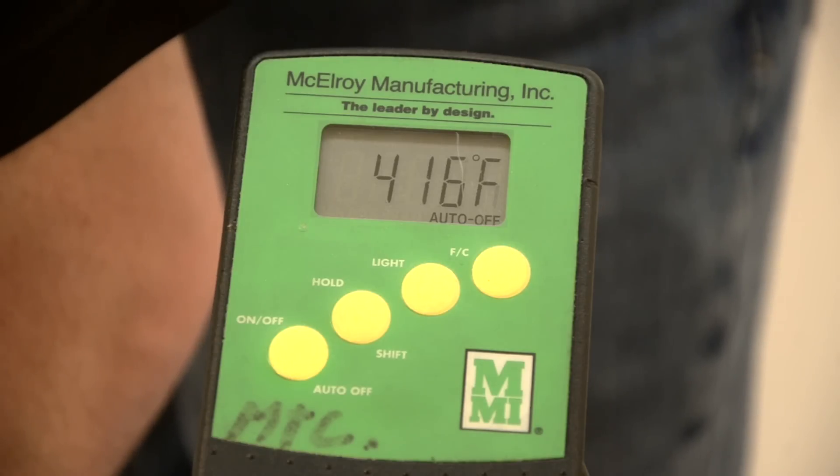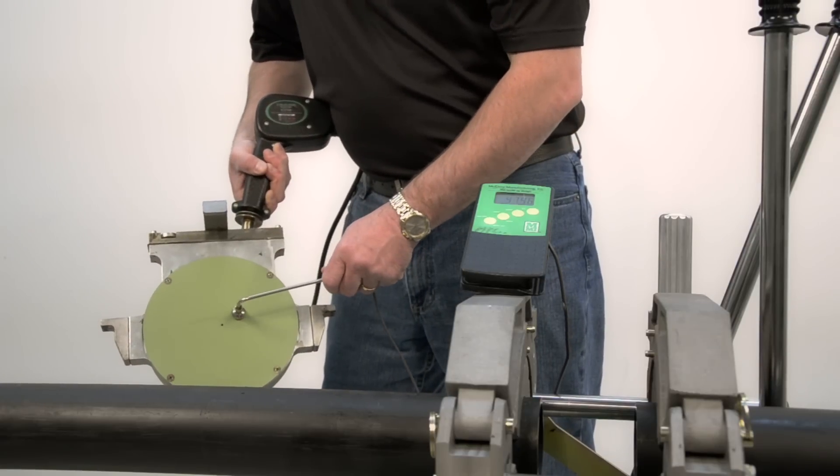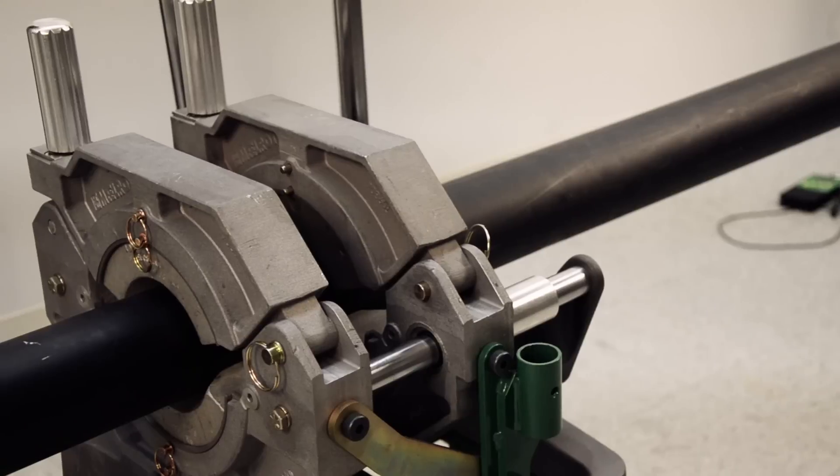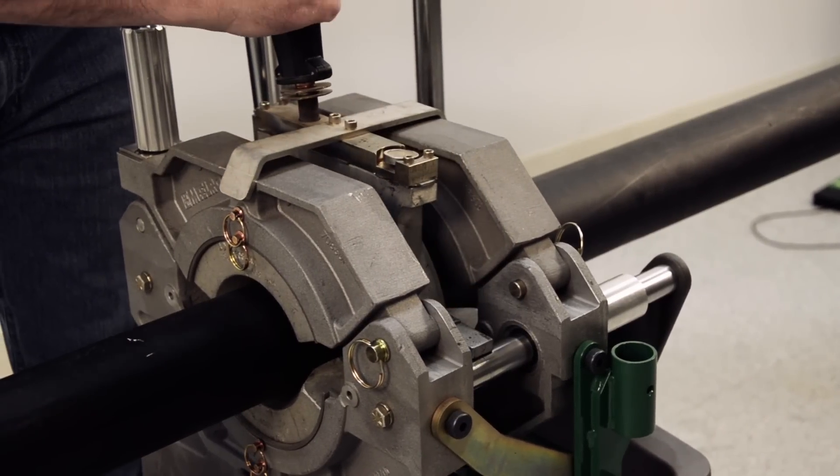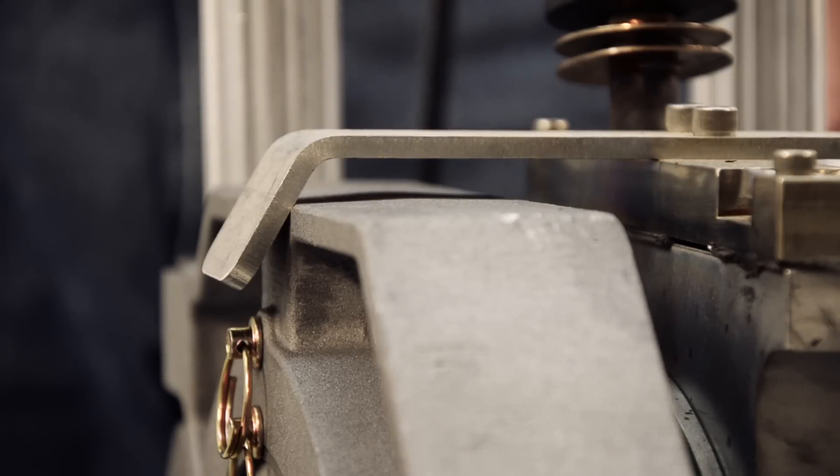ASTM F2620 states that a heater should be in a temperature range of 400 to 450 degrees Fahrenheit to butt fuse. With the heater at proper temperature, place it in the carriage using the guide rod brackets with a stripper bar over the jaws.